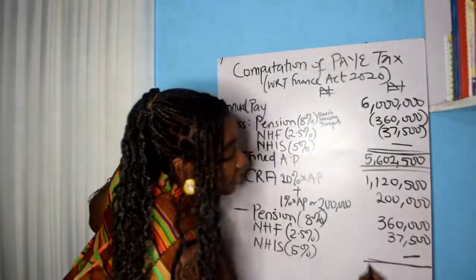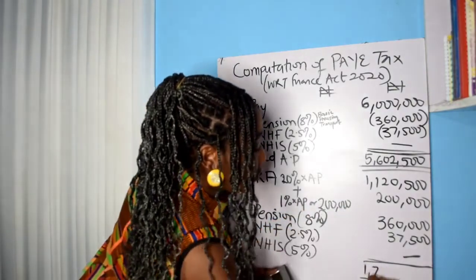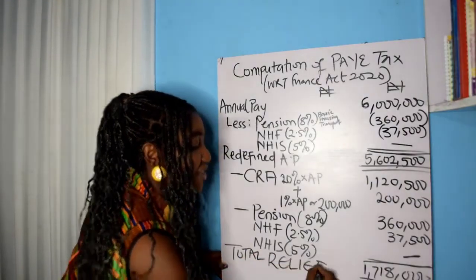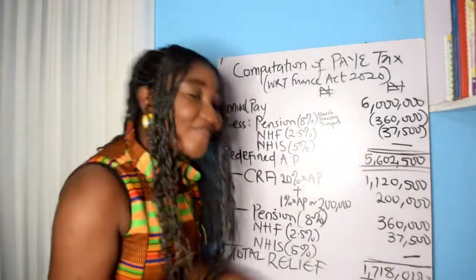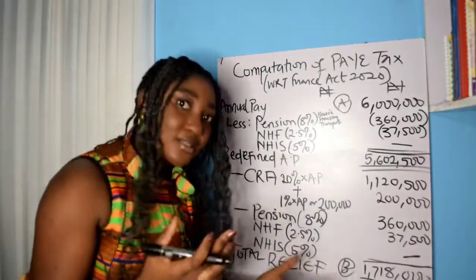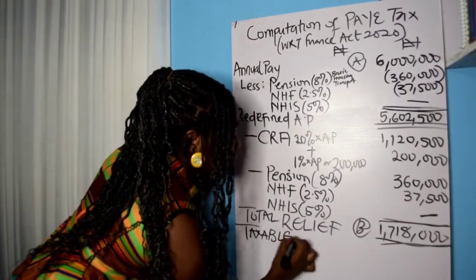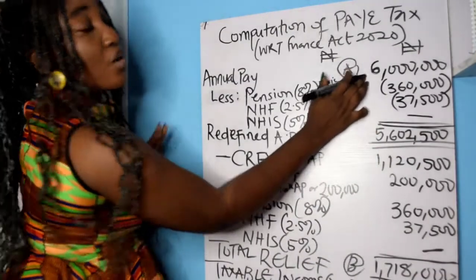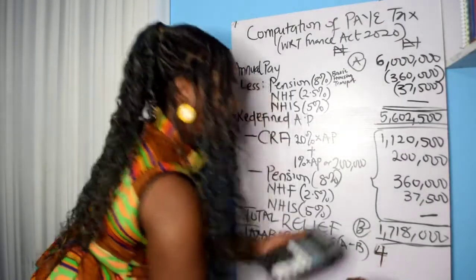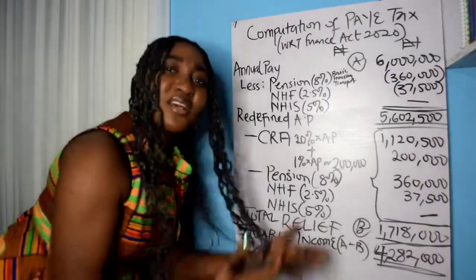You now add up the allowances. When you add the CRA (₦1,120,500 + ₦200,000), pension (₦360,000), and NHF (₦37,500), that gives you a total relief of one million seven hundred and eighteen thousand Naira (₦1,718,000). The government is relieving you of this amount instead of taxing everything that entered your pocket. So your taxable income — what is going to be taxed — is your total annual salary (A) minus total relief (B): ₦6,000,000 − ₦1,718,000 = ₦4,282,000.